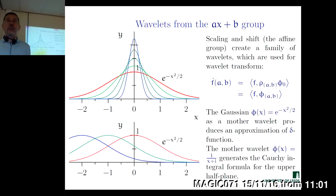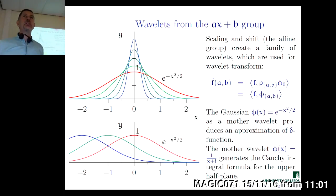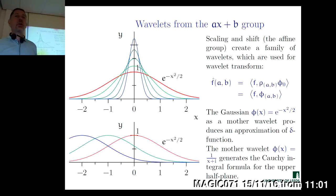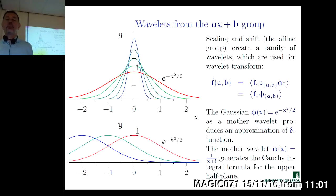Again, that is a good indication that a certain mathematical theory is indeed deep and important: when people in different areas came to that structure independently and gave it different names because they were unaware of work in other areas. If an object has many different names, it is a typical indication that the object is indeed useful. So we will interchangeably use the words wavelets and coherent states for that structure.